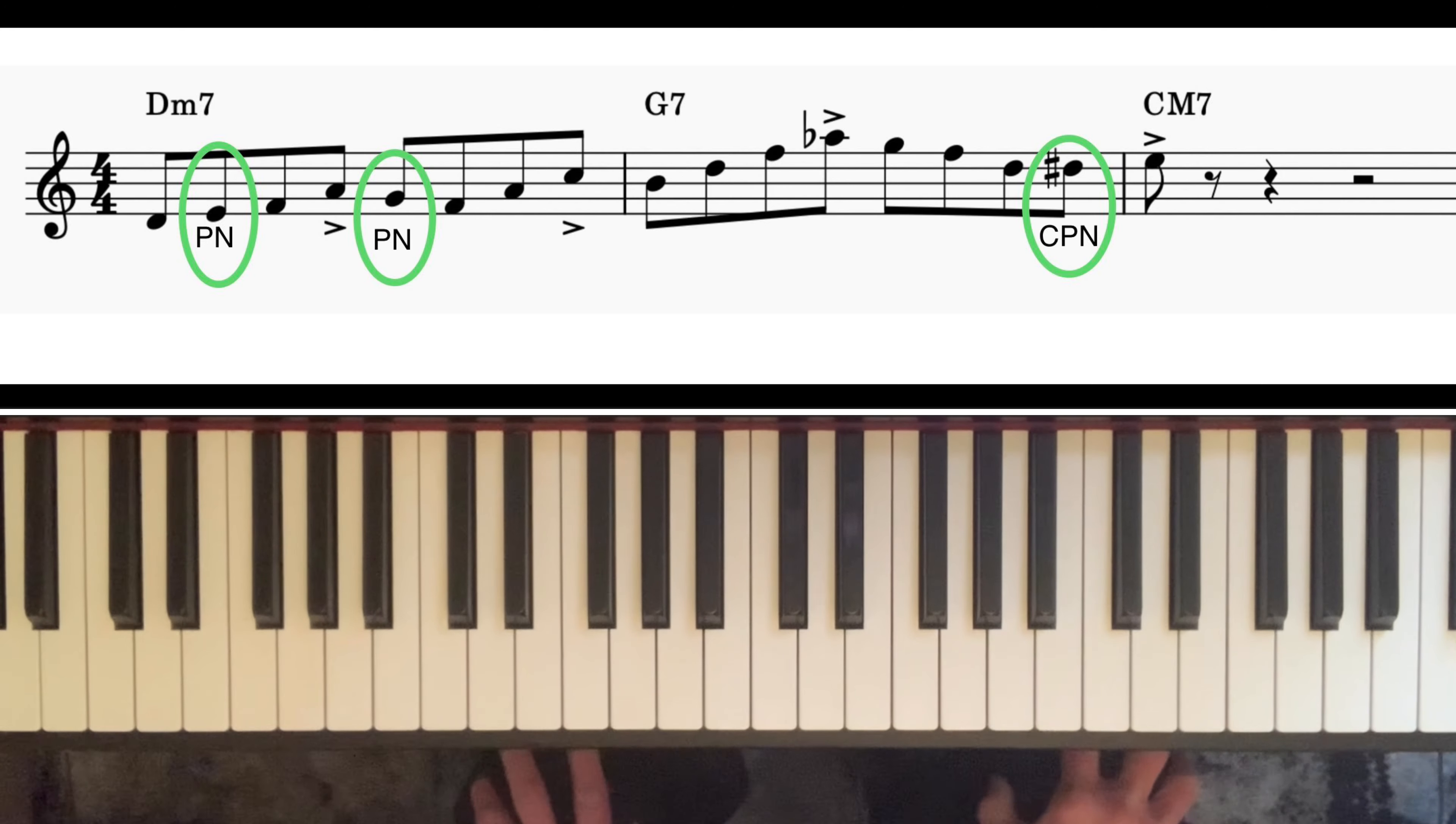So now I want to talk about using a technique that we call rhythmic displacement. In the second example, I played exactly the same notes but instead of starting on beat one, I started on beat two, and that moved the entire line forward by one beat.